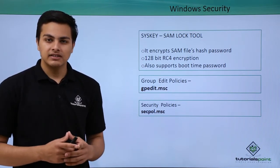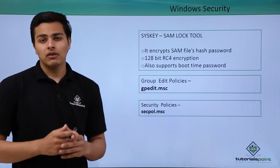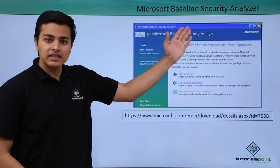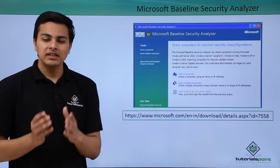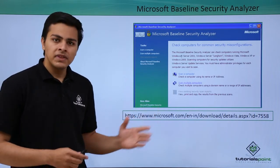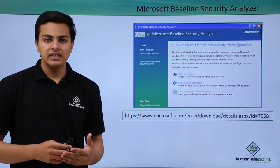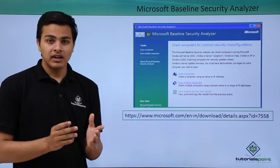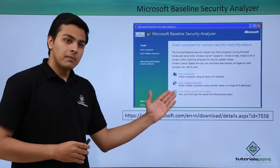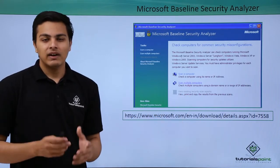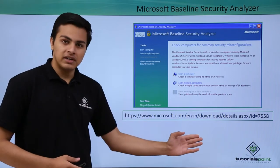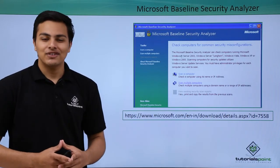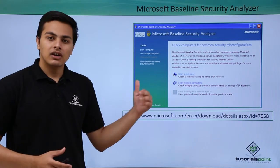Now let's talk about one of the best products of Microsoft we can use to scan our system for various security issues. The product is called Microsoft Baseline Security Analyzer. Using this product we can scan our system for vulnerabilities and missing security updates, and it will generate a final report. We can scan our own computer or multiple computers in our domain. I recommend you download and install this tool and run it on your computer to scan for security issues.